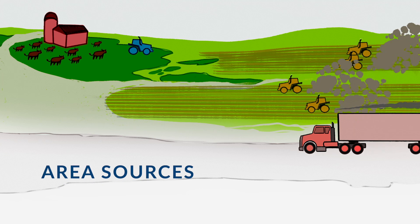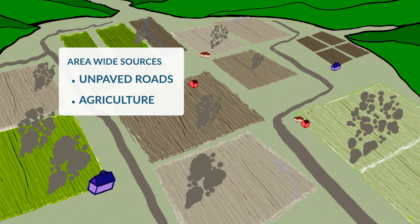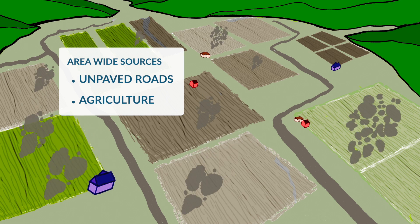Area, or area-wide sources, are those that are spread over large areas. Some examples include emissions from unpaved roads and agriculture.